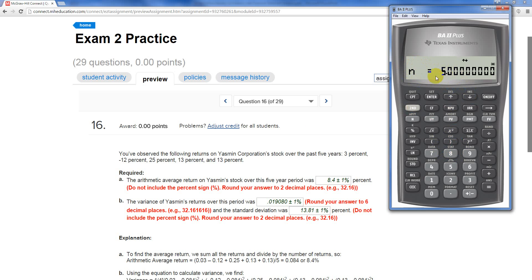Arrow down. N is equal to five. We have five data points. So, so far, so good. Arrow down. X bar is equal to .084. That would be 8.4%. And that is exactly what Connect says the average, or the arithmetic average, or mean, is for this set of data.